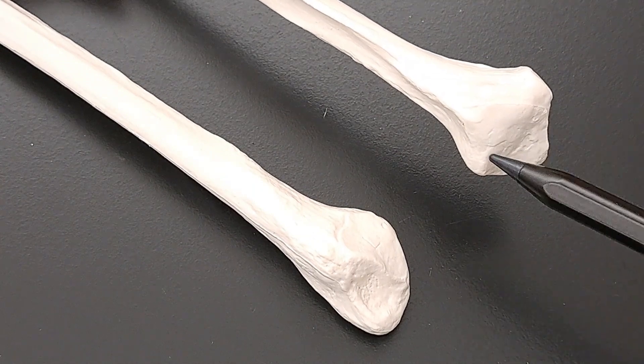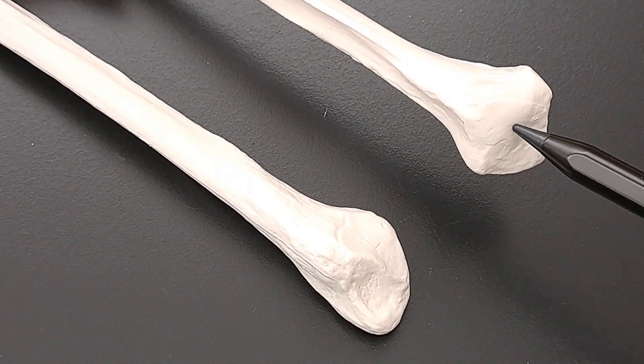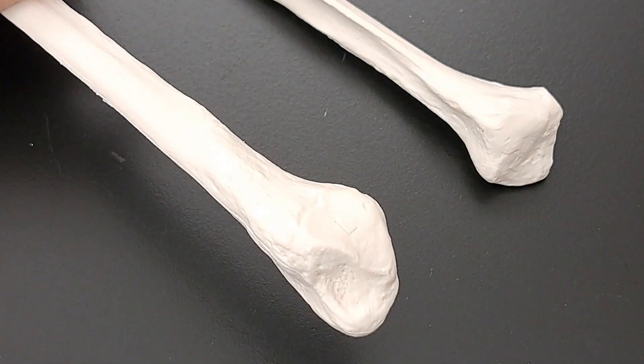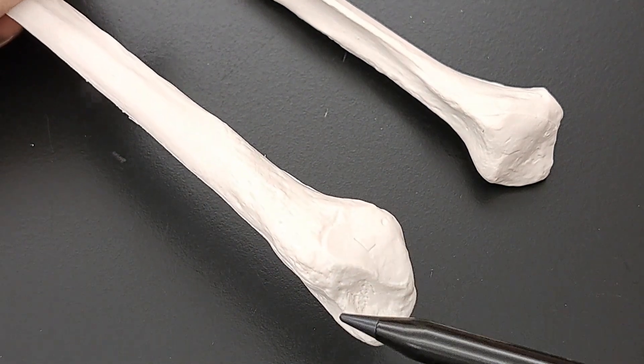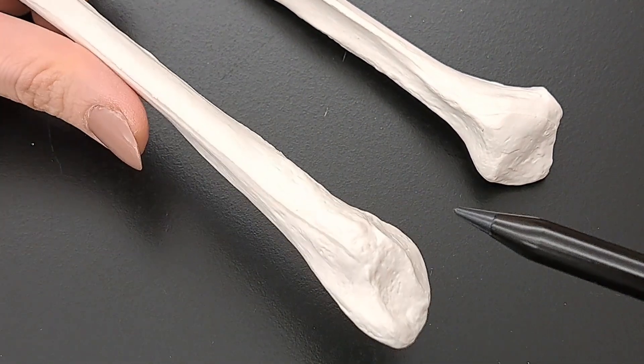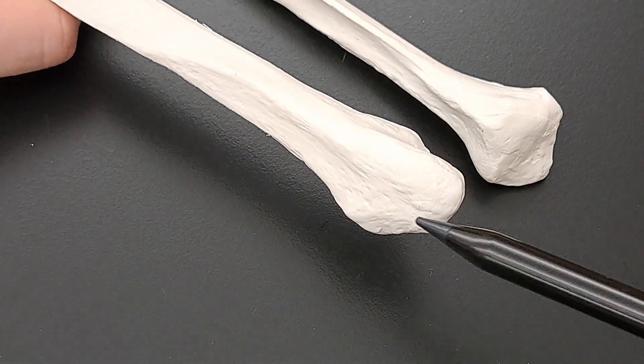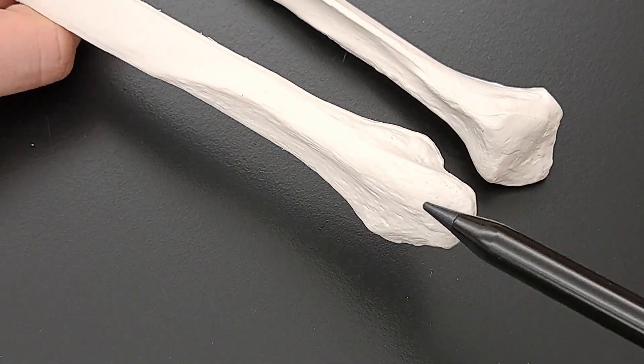And this articular surface articulates with the tibia only, whereas on the other end, which is oval in shape, this end will guide us toward the lateral malleolus. So right here, this is the lateral malleolus of the fibula.